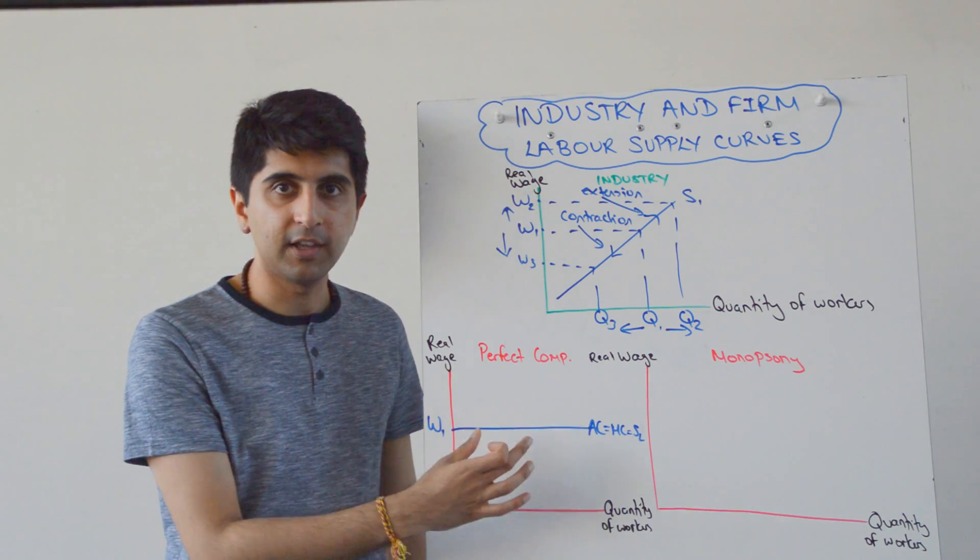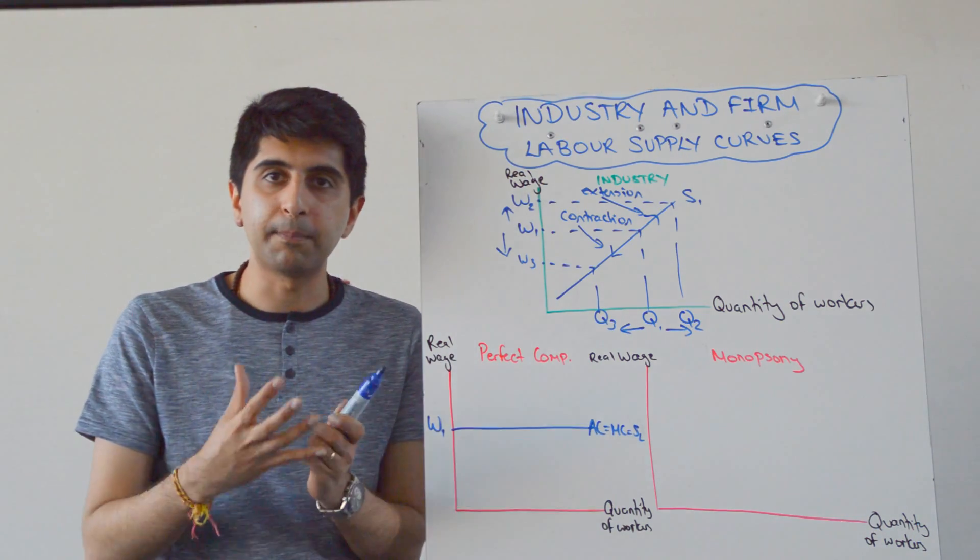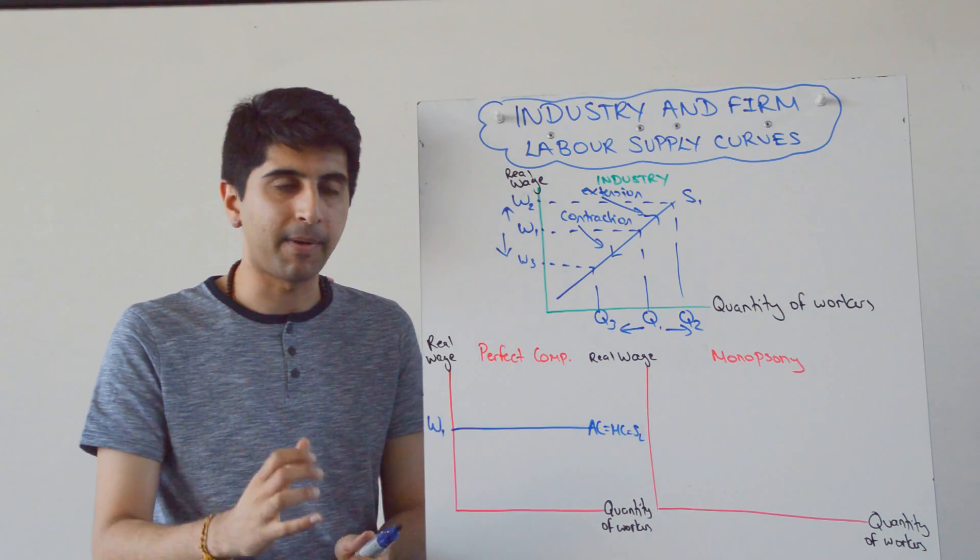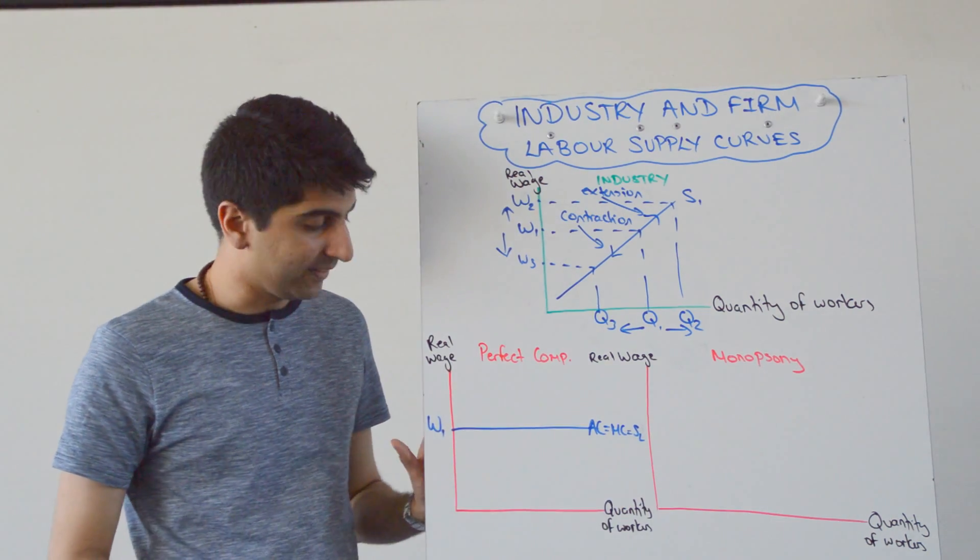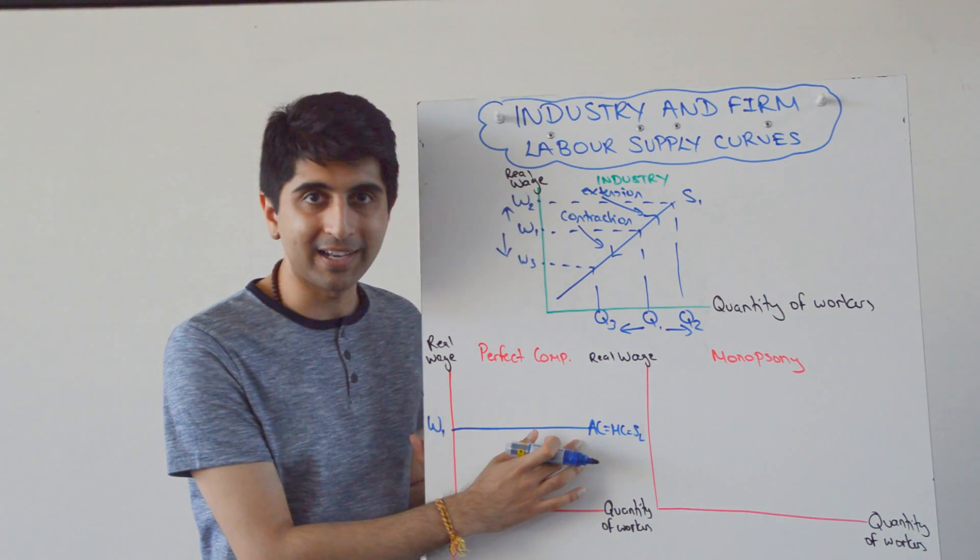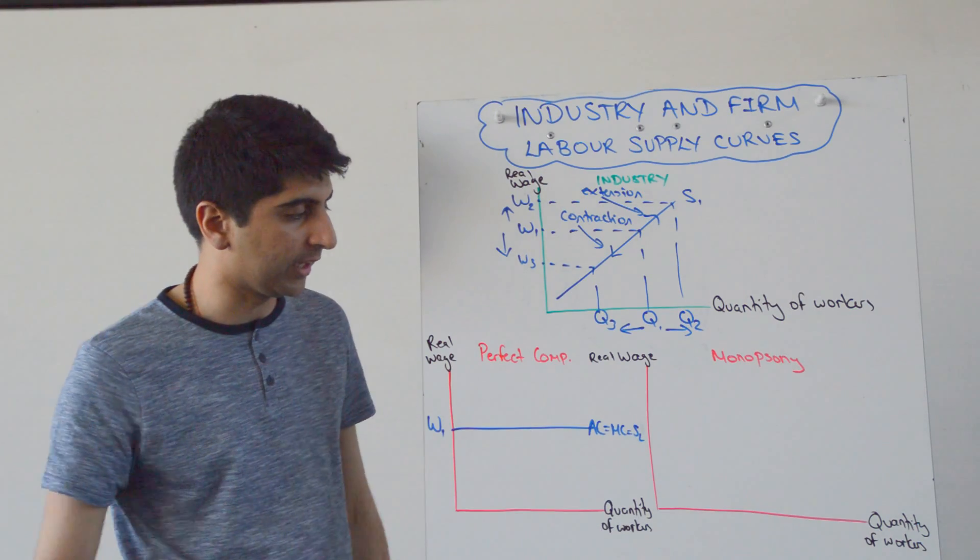So that's what happens in perfect competition. If firms are operating in a perfectly competitive labour market, they are wage takers. They accept the wage. And they have a perfectly elastic labour supply curve looking like that.